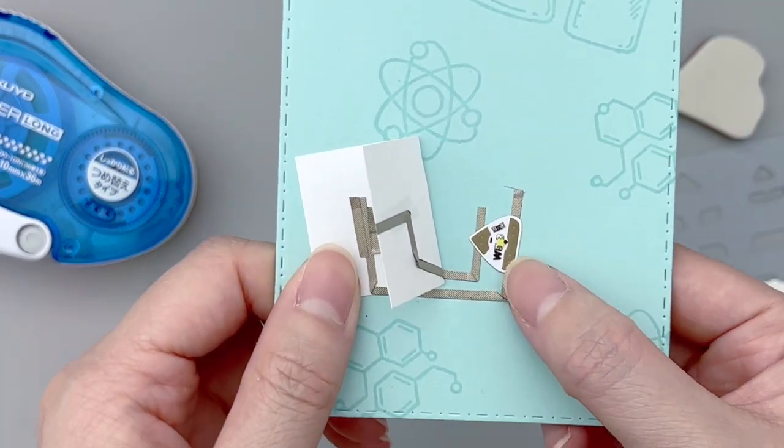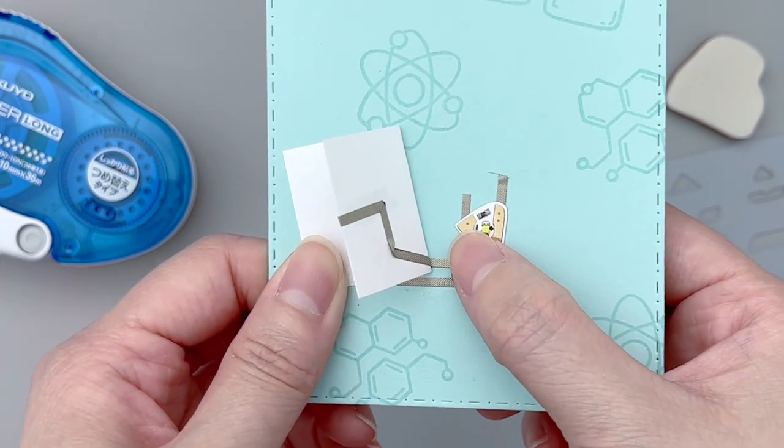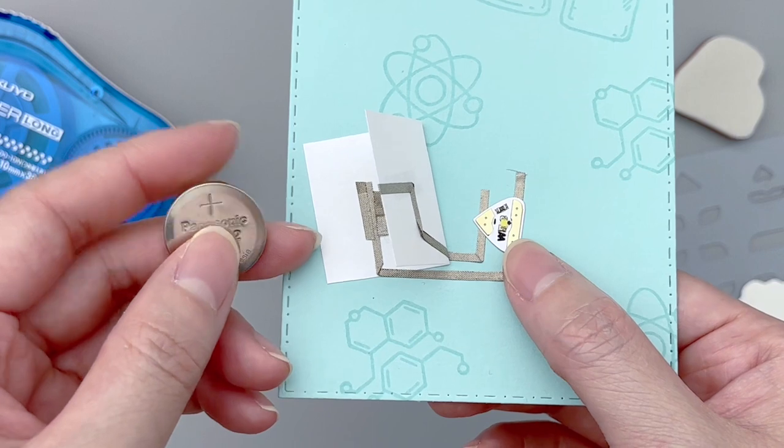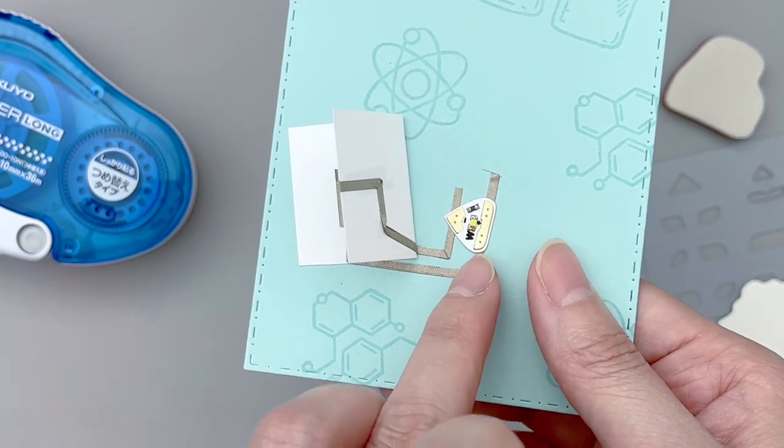Here you just want to make sure that the positive side of the battery corresponds to the positive side of the LED sticker. I like to always check with the plus and minus signs label on the sticker.